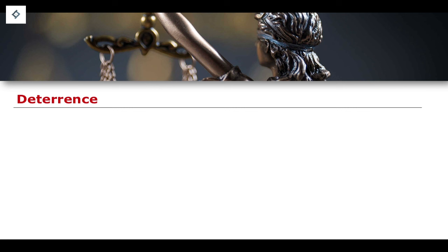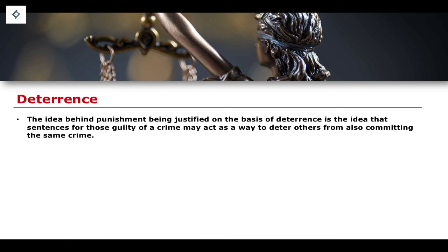Before we look at these different theories of punishment in more detail, I want to make clear that I'm not going to suggest that all of these may be correct, or that some may be incorrect, or that some may be more valuable or more important than others. I'm simply going to be quite descriptive in my explanation of each of these different theories. So, for the first one, we're going to talk about this idea of deterrence — the theory that the idea behind punishment is to essentially deter other people from committing a crime.